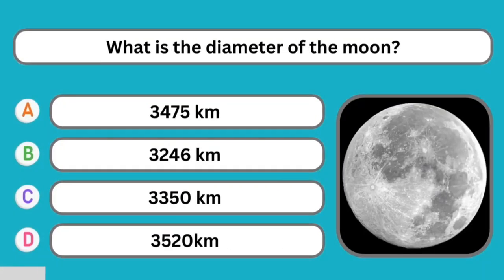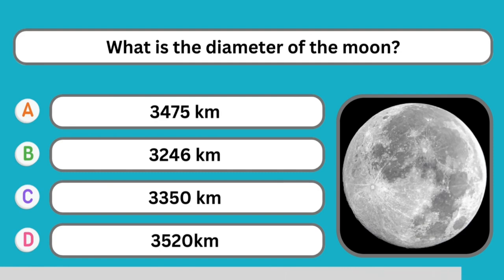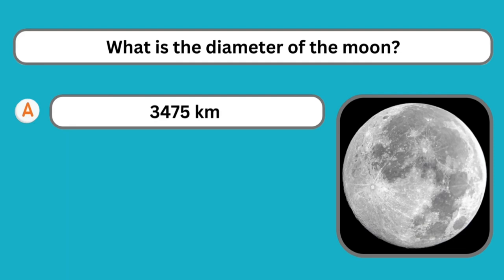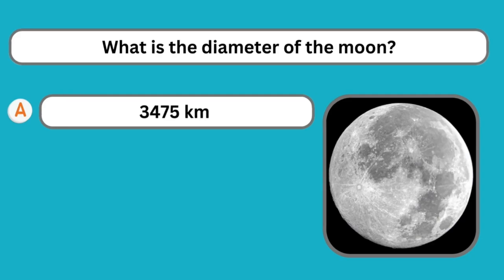Question number thirty-two: What is the diameter of the moon? The correct answer is 3475 km.